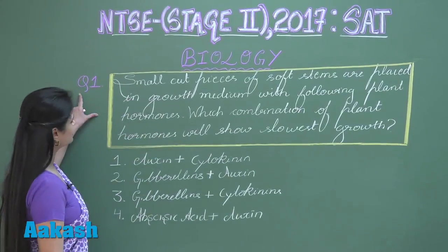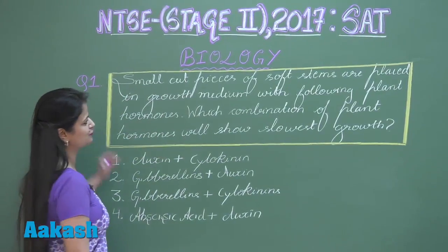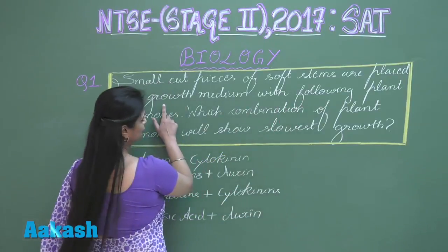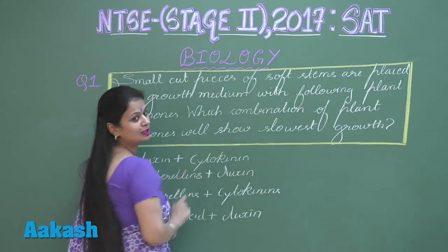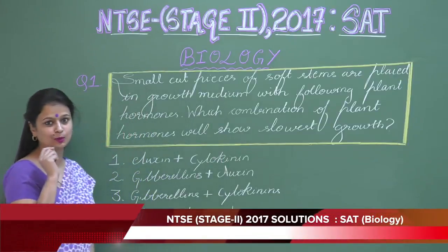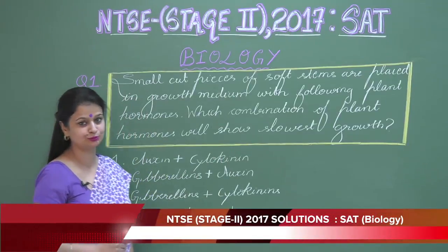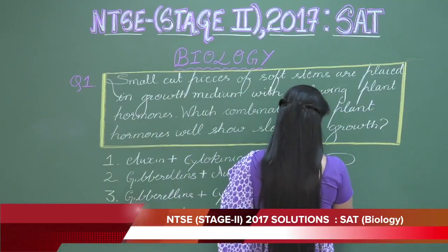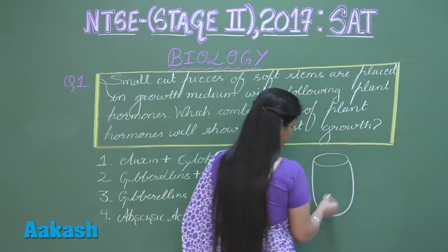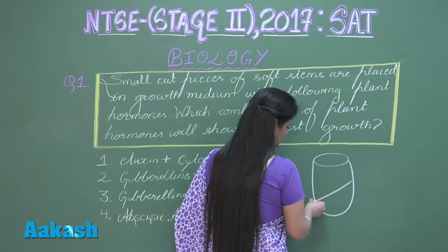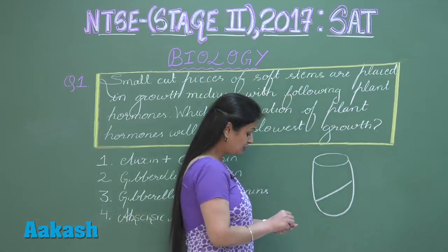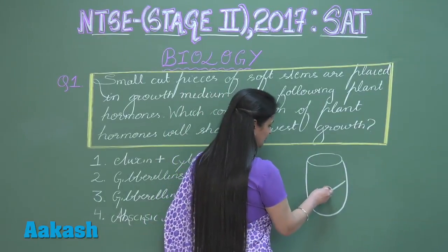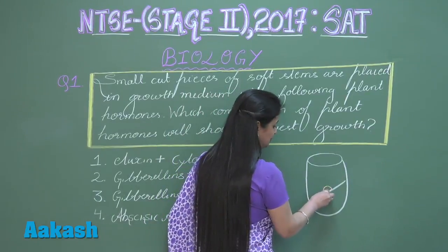Now, small cut pieces of soft stems are placed in a growth medium with the following plant hormones. This question is related to tissue culture. In tissue culture, we place an artificial nutrient medium in a test tube, and on this nutrient medium we place a part of the plant, which we call the explant.